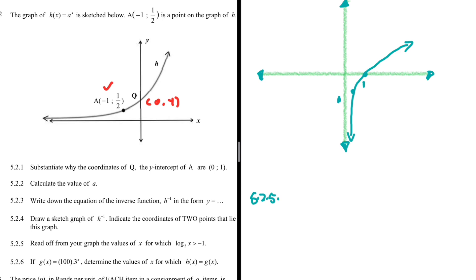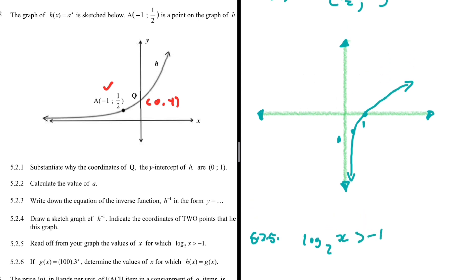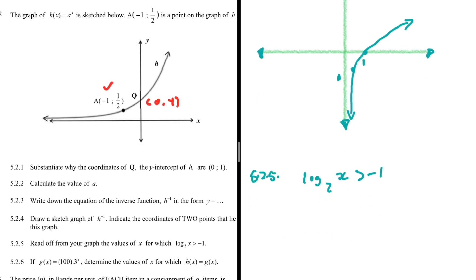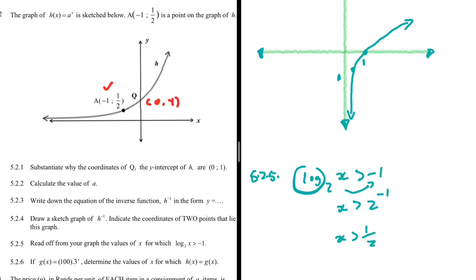For 5.2.5, find the values of x for which log₂(x) > −1. We solve this algebraically: log₂(x) > −1 means x > 2⁻¹, which is x > ½. Those are the values of x for which h⁻¹(x) is greater than −1.